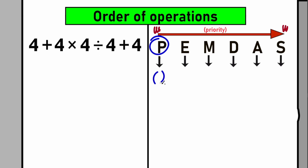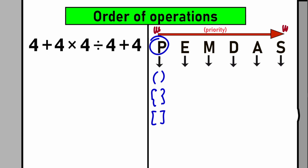Letter P stands for parentheses — we're talking about these types of brackets and grouping symbols. Let's scan our question: where do we have grouping symbols? I don't see any parentheses here, so we can skip this part. After parentheses, we move to the next step: exponents. Let's find where we have exponents in our question.